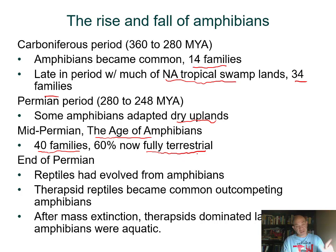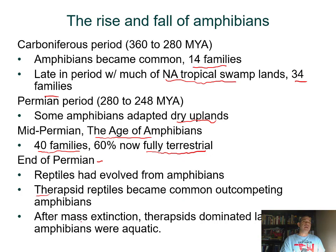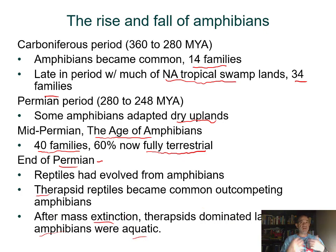Amphibians we know today still require water because they lack an amniotic membrane in the egg. By the end of the Permian, there was a massive extinction. Reptiles had already started to evolve from amphibians, and the therapsid reptiles became common and out-competed the amphibians. After that Permian mass extinction, the therapsids began to dominate the land, being better adapted for terrestrial life, pushing amphibians back toward water.